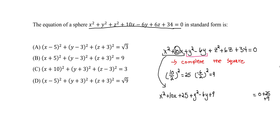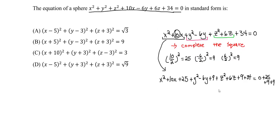For the z term we do the same steps: take 6 divided by 2 to get 3, and 3 squared is positive 9. So we add 9 to z squared plus 6z, and add 9 to the other side. On the right side we now have 34 plus 25 plus 9 plus 9, which gives us 43 on that side.